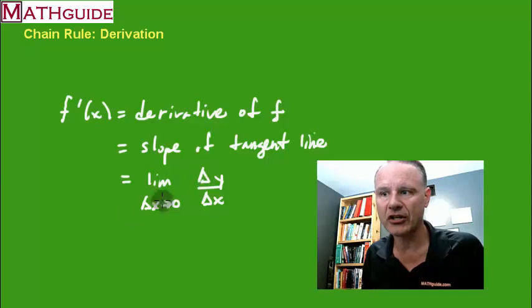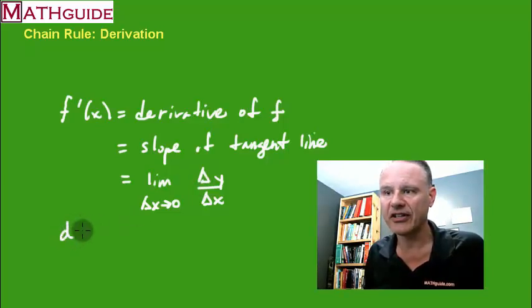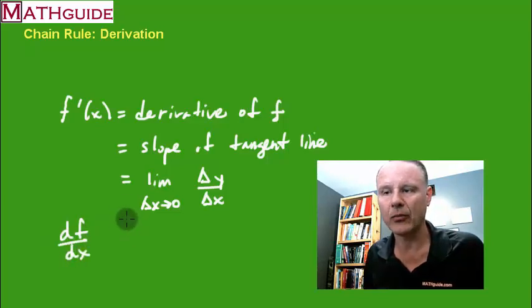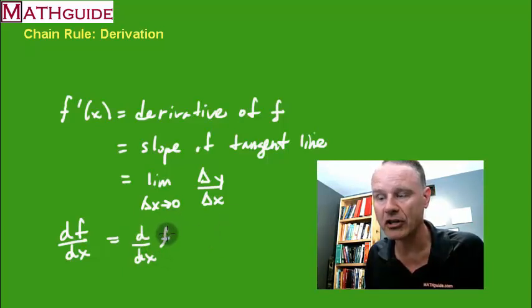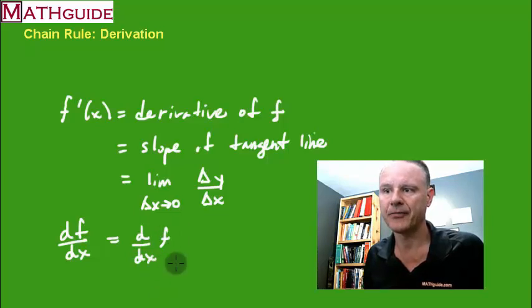However, new notation that you will see is df/dx. That means the same thing - we're taking the derivative of f with respect to x. Sometimes I've seen the same thing written like this, and you'll see a function written over here. So you're taking the derivative of this function with respect to x, and you'd put in what the function is here.